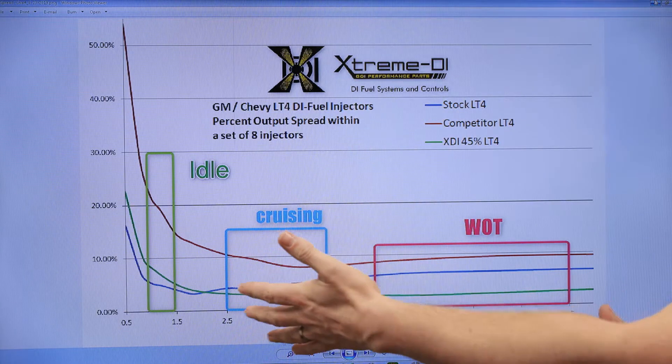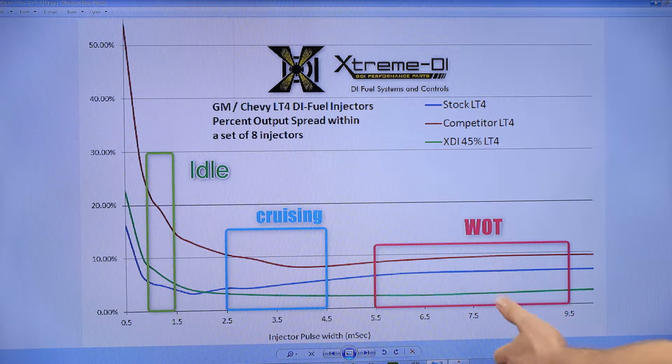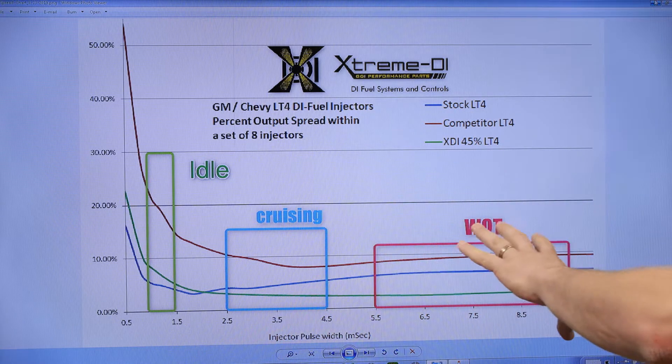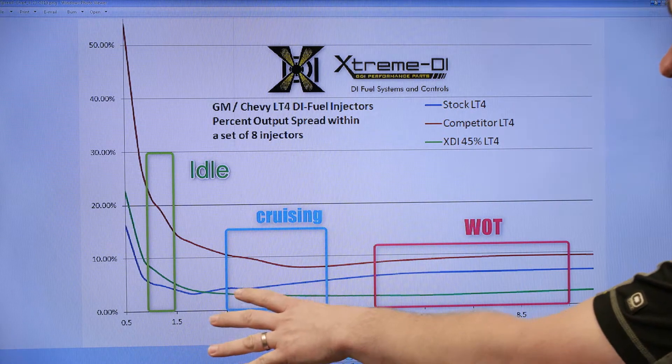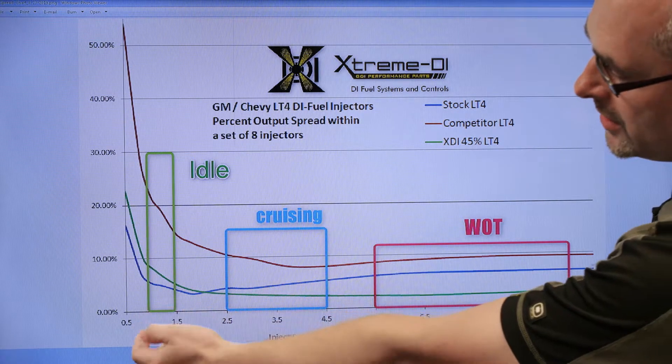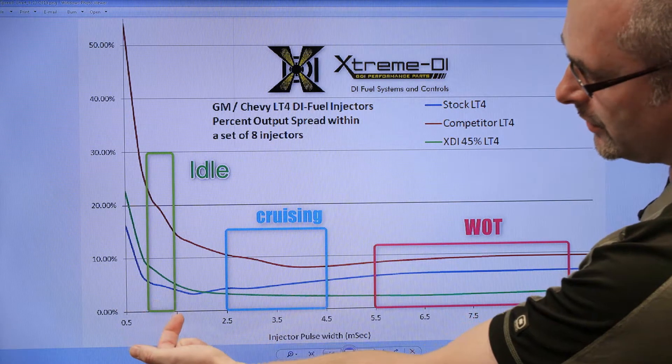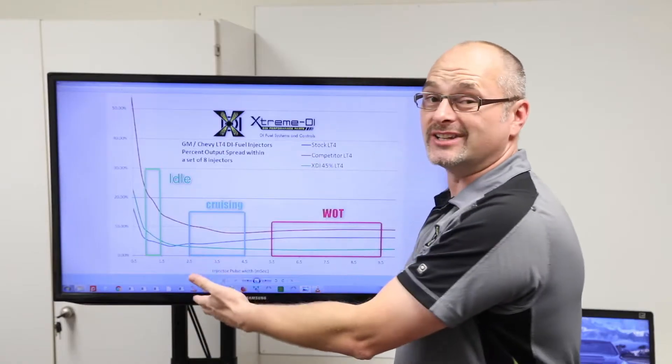Back to the chart, what that means: pulse width represents a longer pulse width for your wide open throttle area, and middle pulse width represents your cruising, your daily driving, and the low pulse width that we have circled in green here, between 1.0 and 1.5 milliseconds, represents your idle.